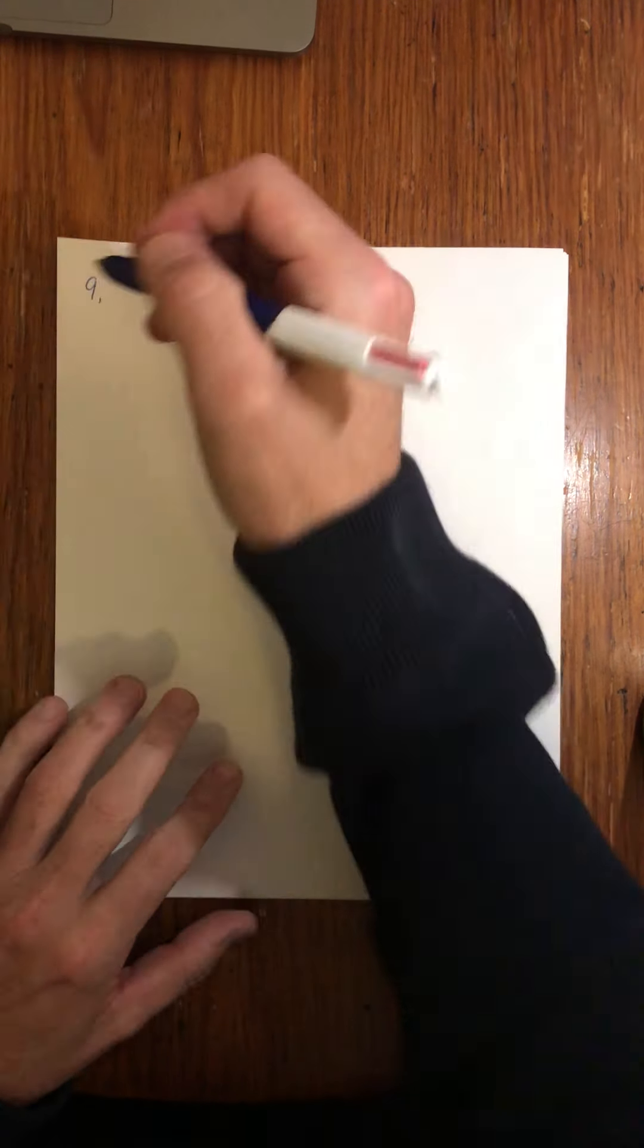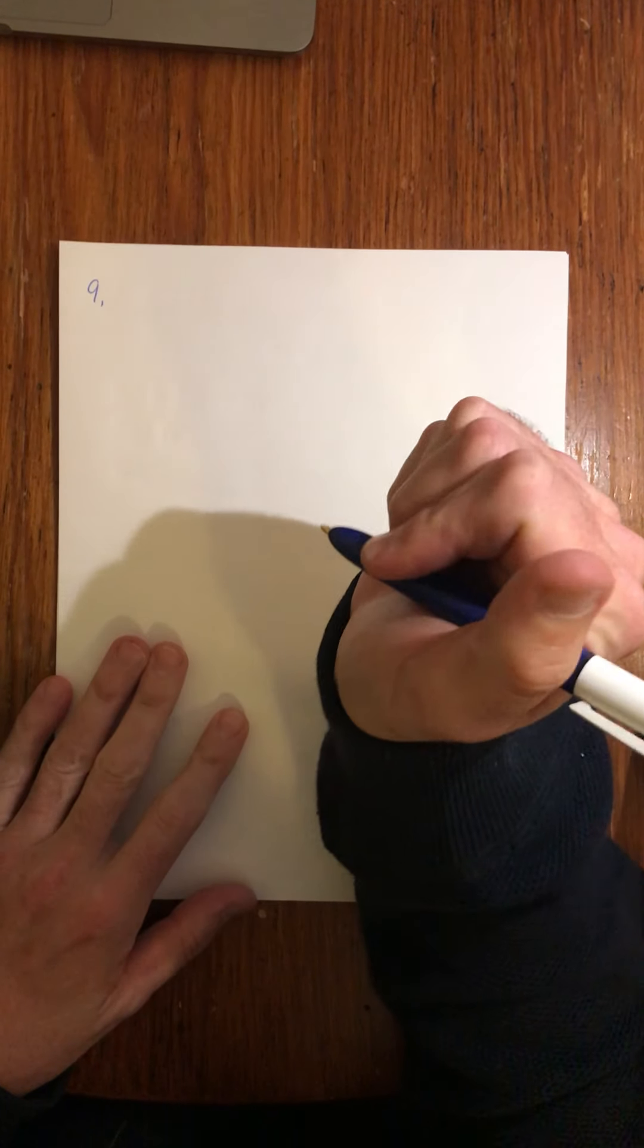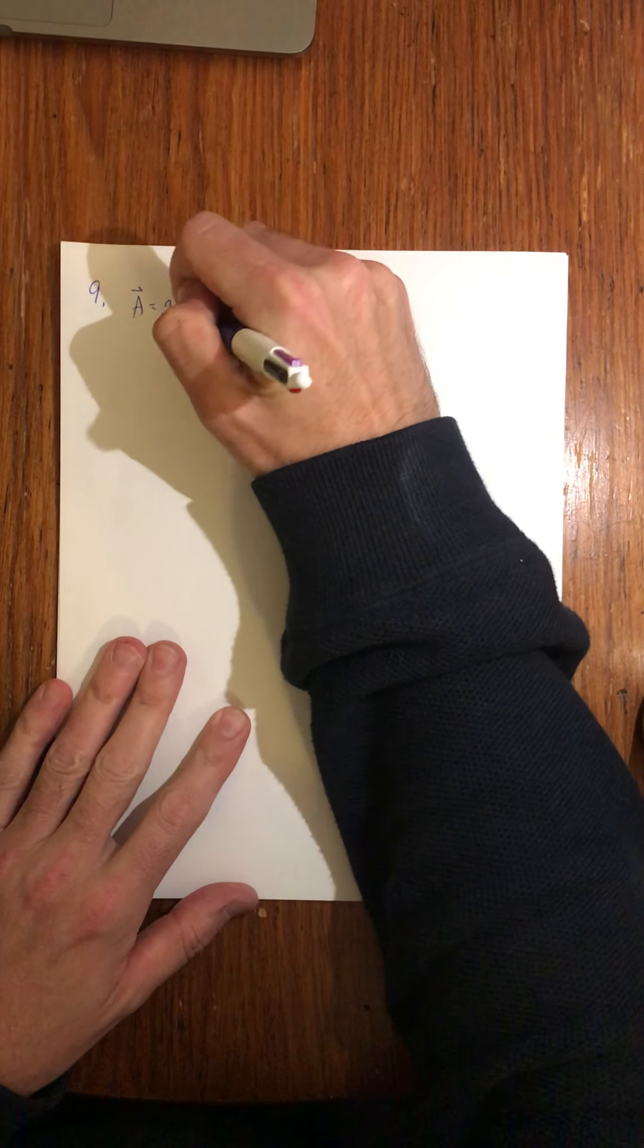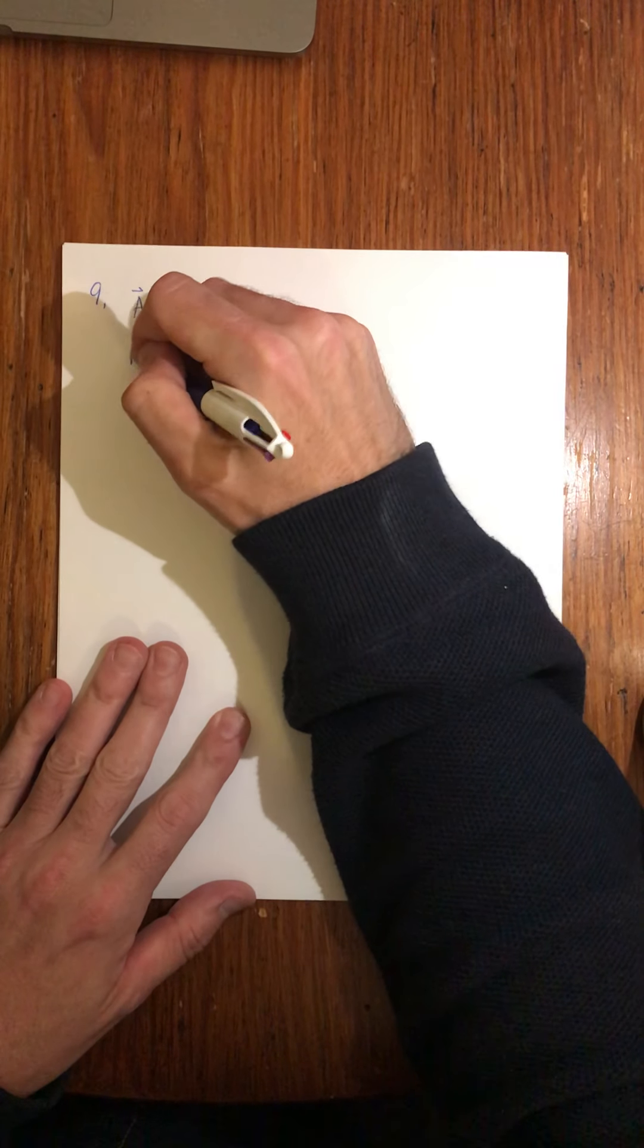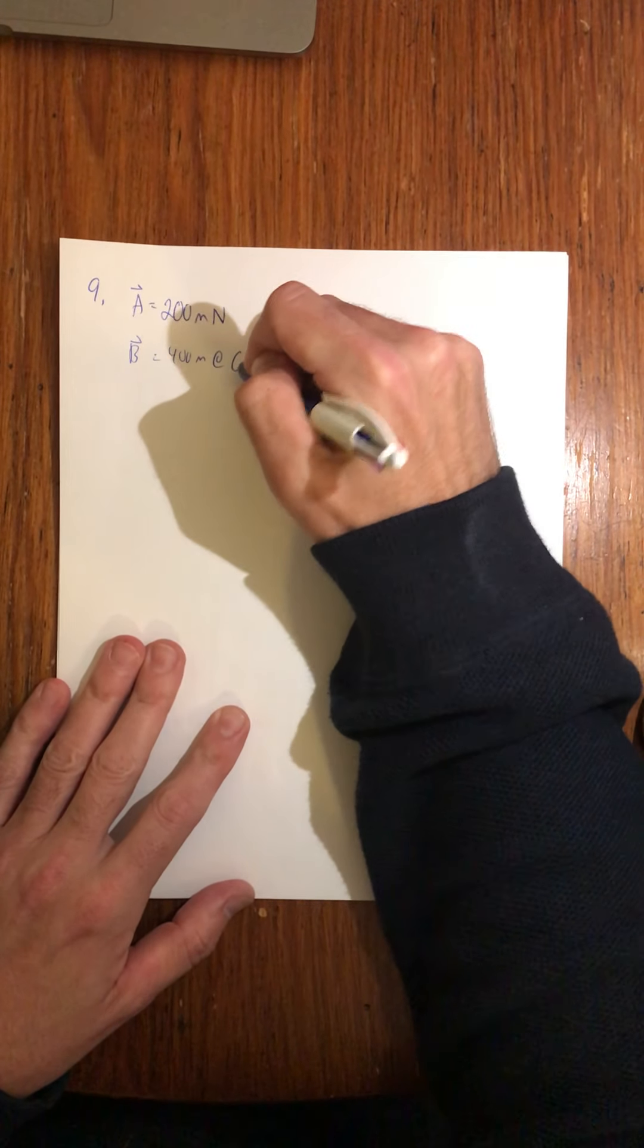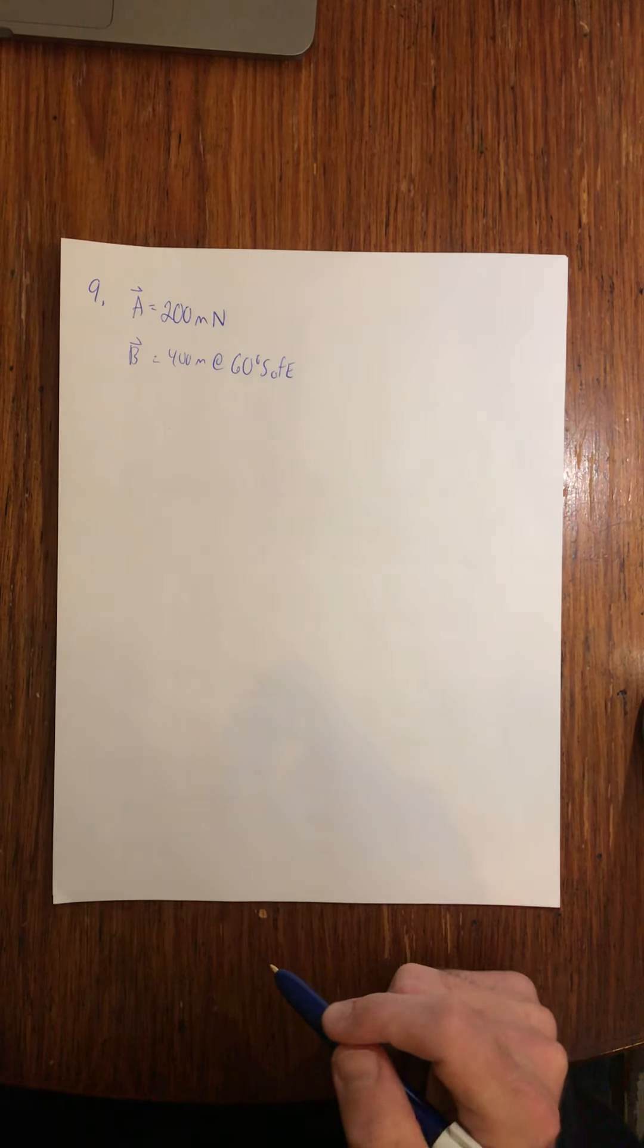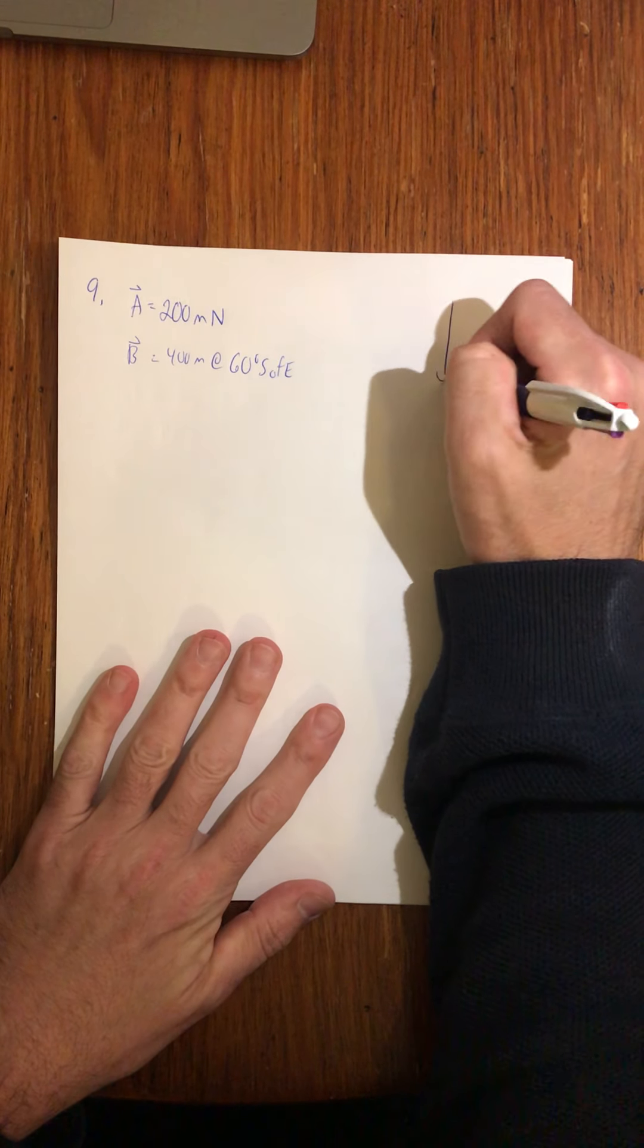Alright, let's do numbers 9 and 10 on the vector sheet. So 9, a crazy dog runs 200 meters north, so we'll call that A, for lack of a better thing to call it. 200 meters north, and then B, it goes 400 meters at 60 degrees south of east. Alright, find the resultant graphically.